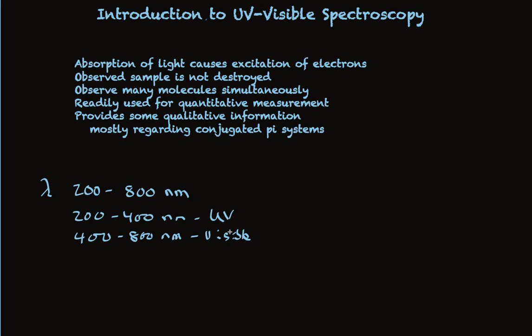You observe many molecules simultaneously because you dissolve a sample in solvent. UV visible light is passed through that solution and the amount of absorption of that light is measured. As you're passing light through the solution, there are many, many molecules in solution. So we're observing the absorption of all of those molecules simultaneously — simply measuring the total absorption that the whole solution causes.